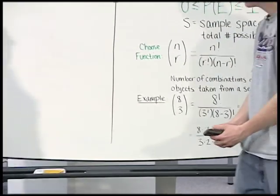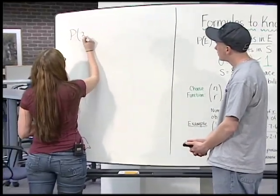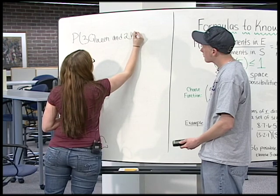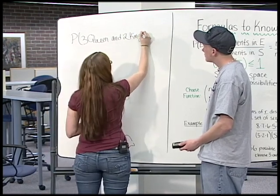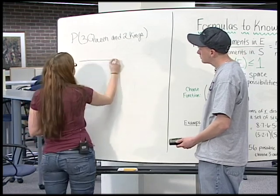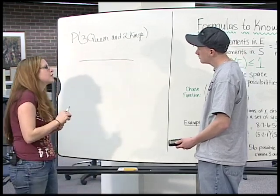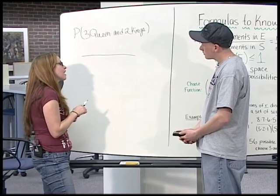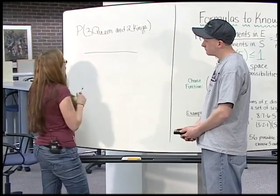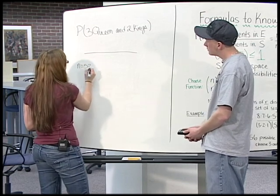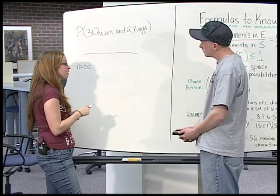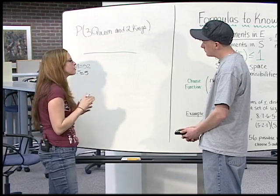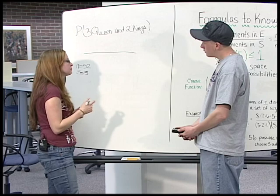Now let's work on your problem: the probability of 3 queens and 2 kings. First we're going to work on the denominator. In your P function, it's the number of elements in E over the number of elements in S. How many different cards are in a deck? There's 52. So for your choose function, n would equal 52. And how many cards were you dealt? Five. So r would equal 5. So your choose function for the total number of possibilities would be 52 choose 5.